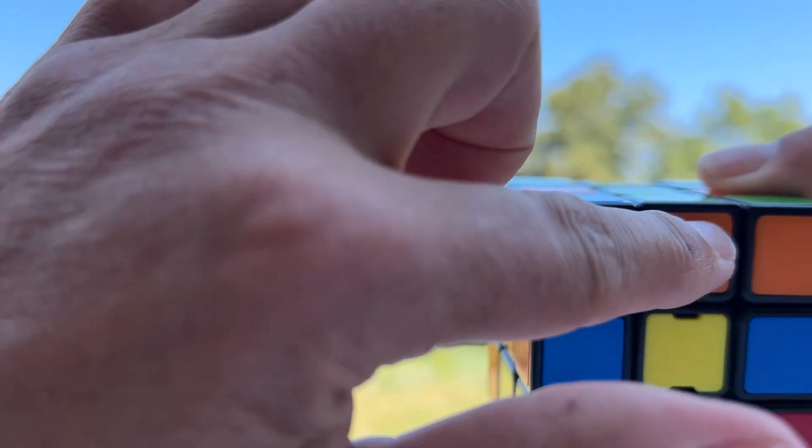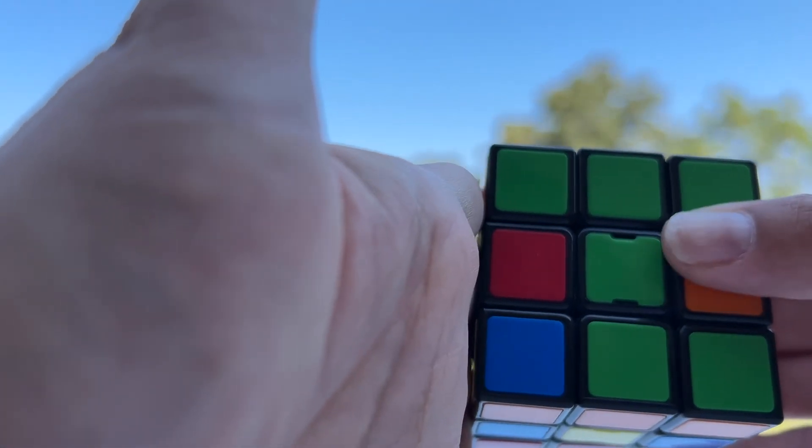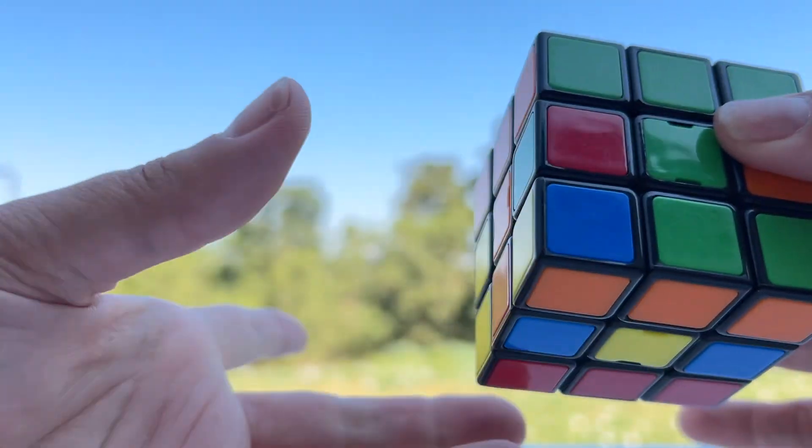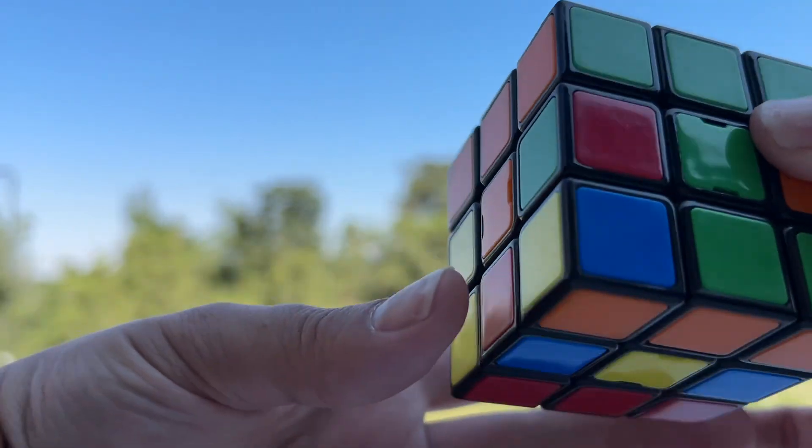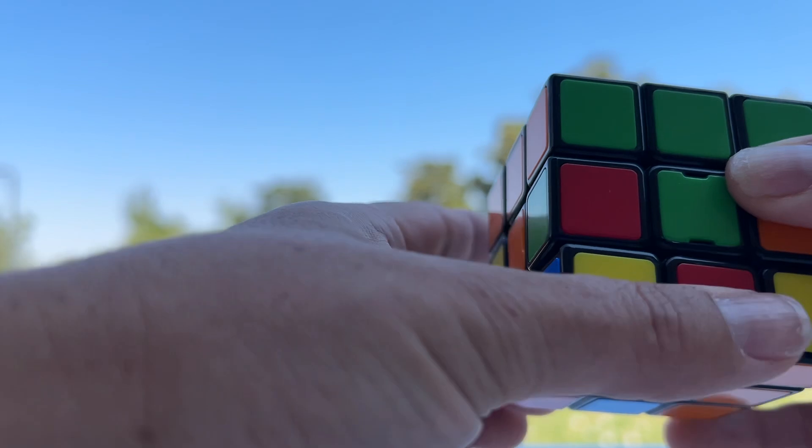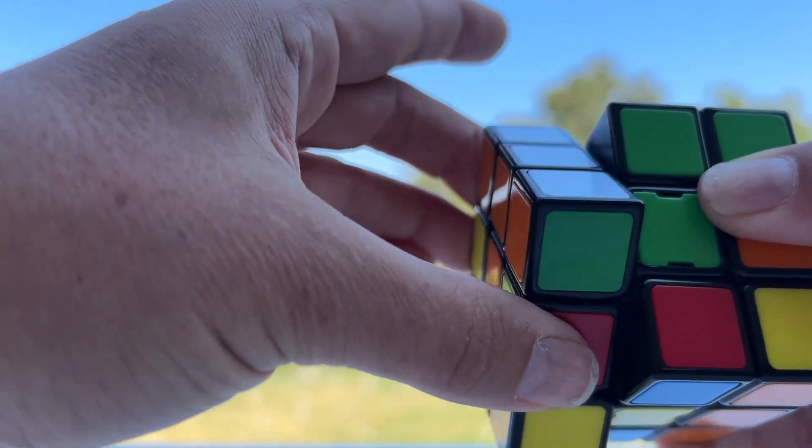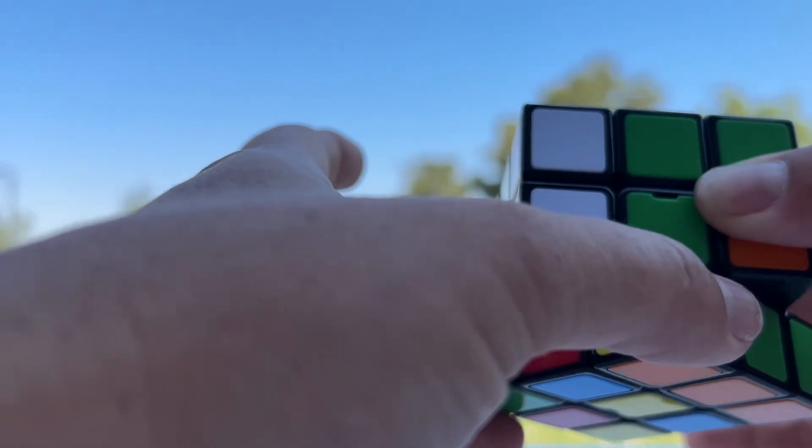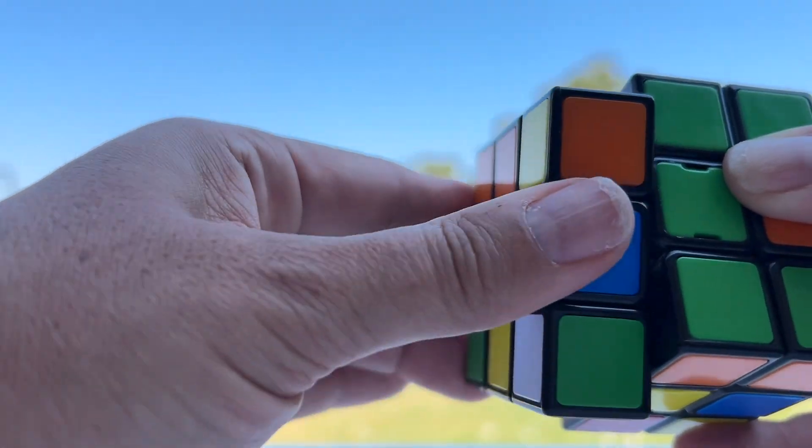Now this time we're doing it with the orange which is on this side right here. So we're going to turn the bottom away from where it goes, away from the orange. And then we're going to bring the orange side down, bring the bottom back and the side back.